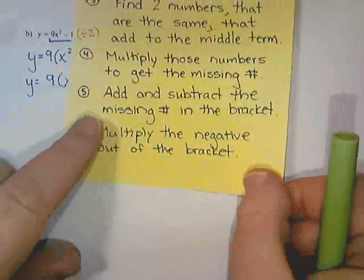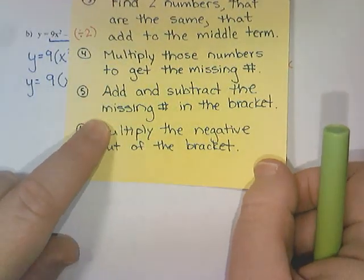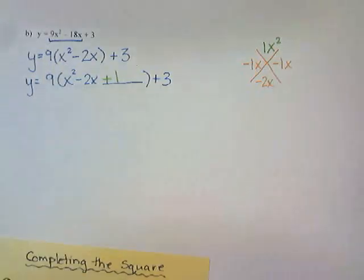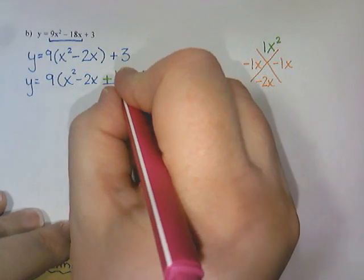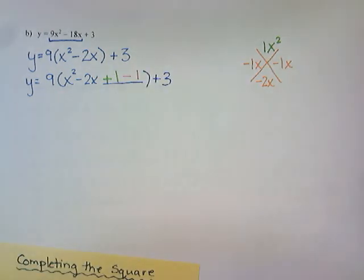However, we have to add and subtract the missing number in the bracket. So I can't just add a 1. That changes my equation. So we also do the opposite and subtract 1.